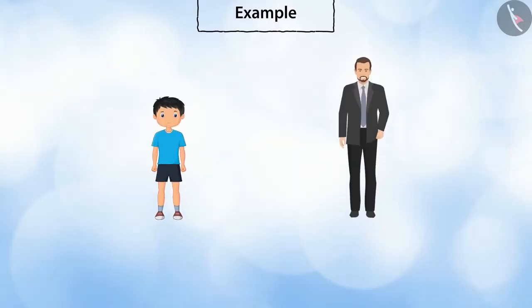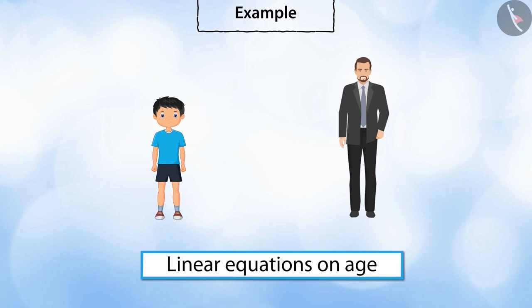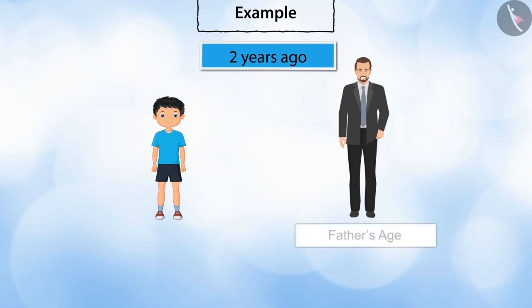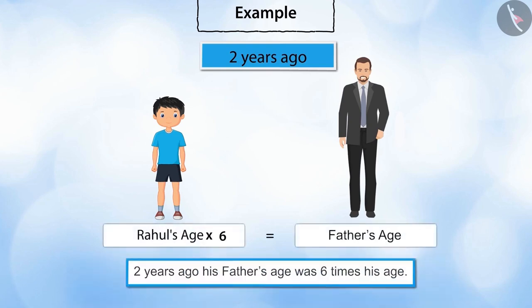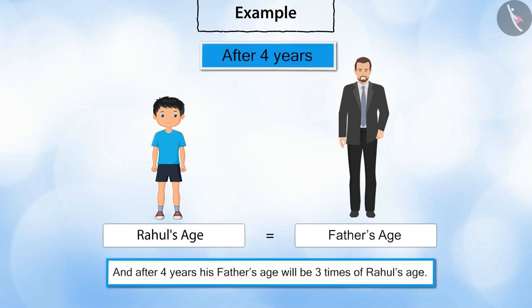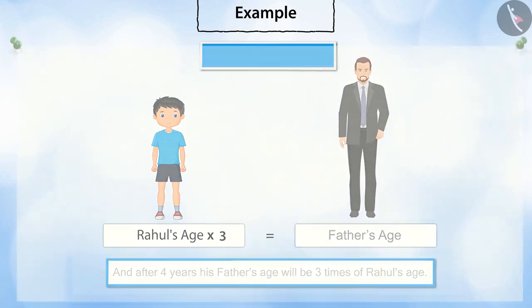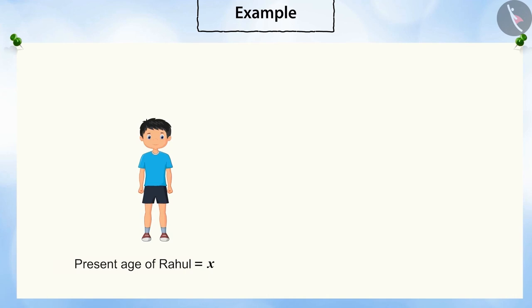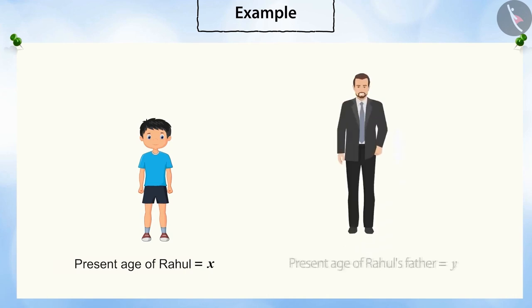Rahul wants to write a linear equation on his father's age and his age. Two years ago, his father's age was six times of Rahul's age. And after four years, his father's age will be three times that of Rahul's age. Let's find how to express this condition in algebraic form. Let the present age of Rahul be X and his father's present age be Y.